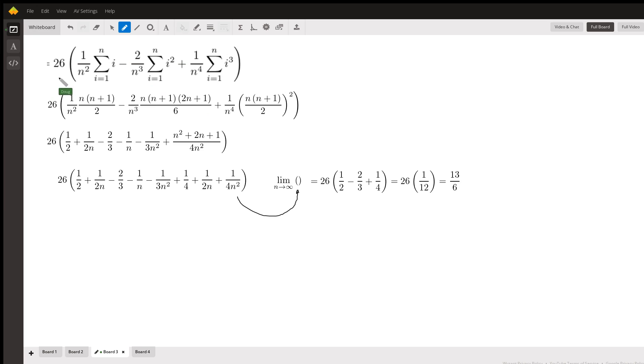Here is that summation notation, but we're going to replace each of these with their equivalent expression in terms of n. Here's n times (n+1) over 2, here's the formula for i², and here's the formula for i³.